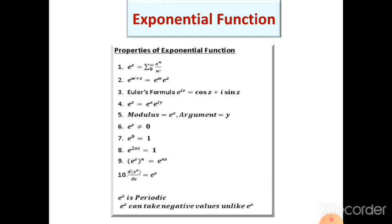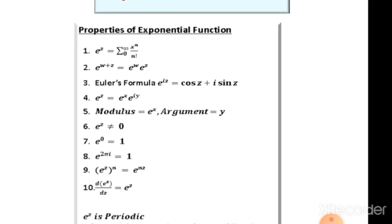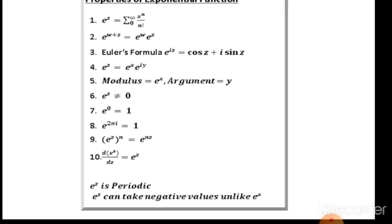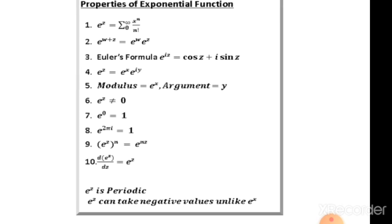The complex exponential function e^z is defined by the same power series as the real case: e^z = Σ zⁿ/n!. It satisfies e^(w+z) = e^w · e^z, and using z = x + iy, we get e^z = eˣ · e^(iy), so the modulus is eˣ and the argument is y. Also e^z ≠ 0, e^0 = 1, e^(2πi) = 1, and d/dz(e^z) = e^z. However, there are important differences from the real exponential.